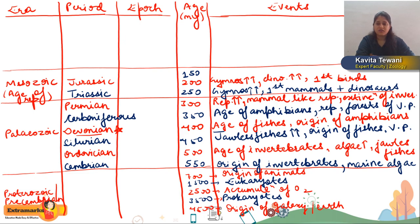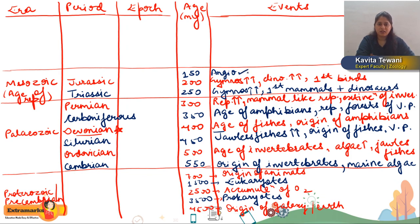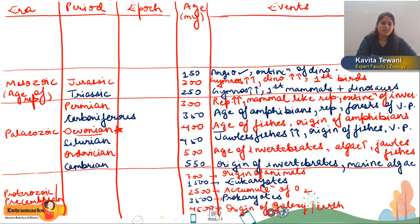Mammals first appeared in the Mesozoic era. In the Cretaceous period, angiosperms appeared. There was extinction of dinosaurs, and modern insects and modern birds were also seen. This was your Mesozoic era.